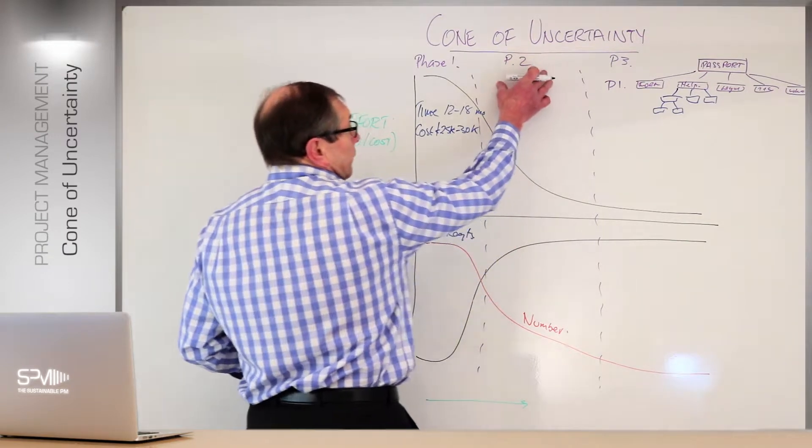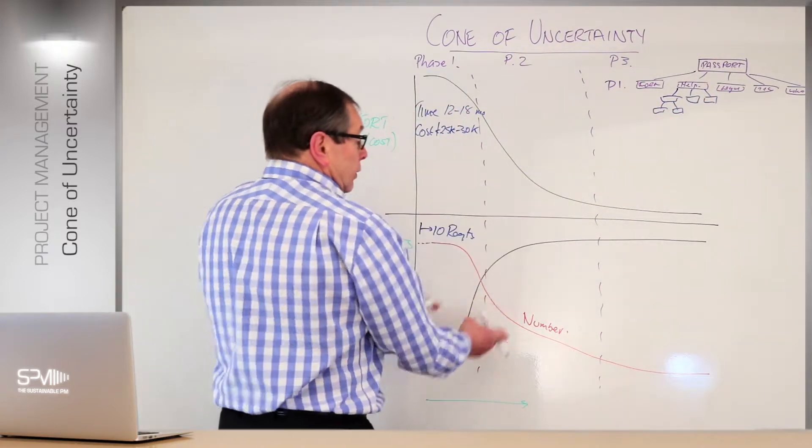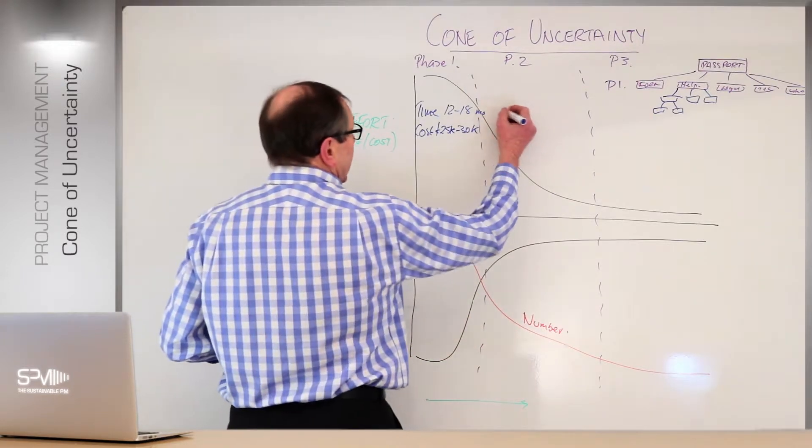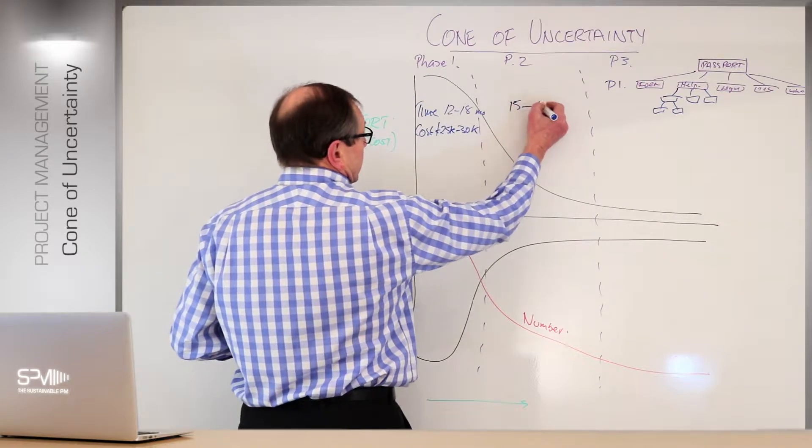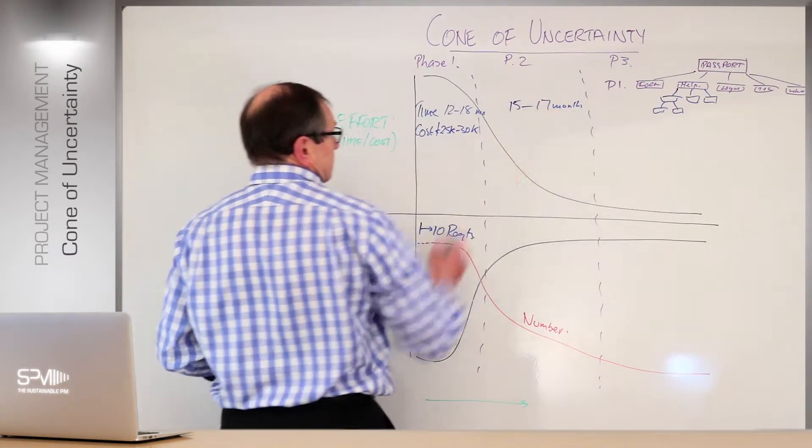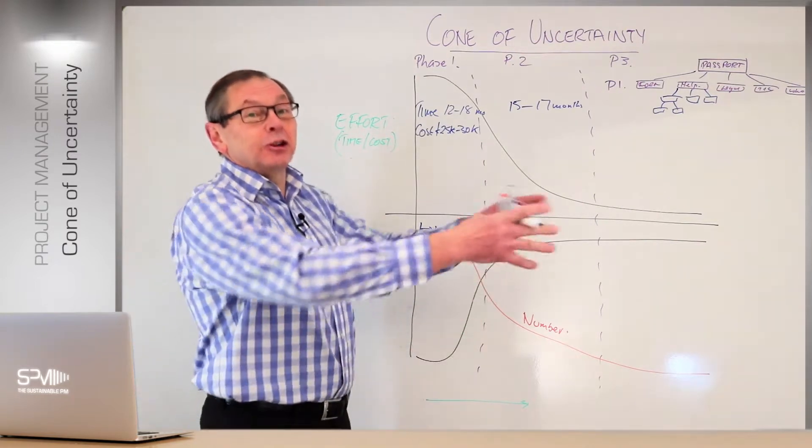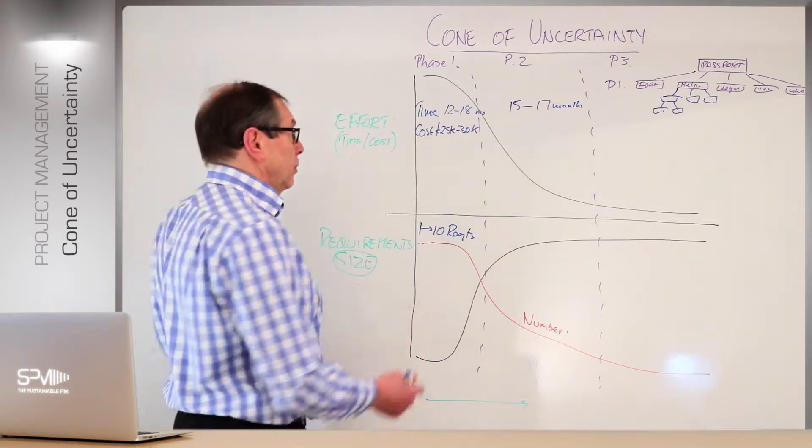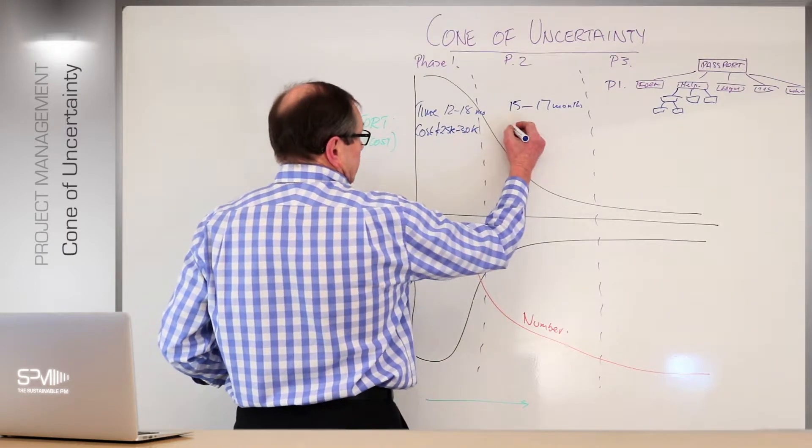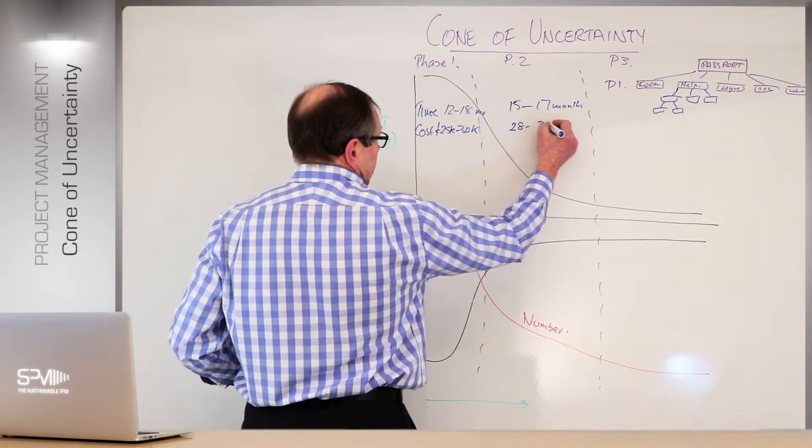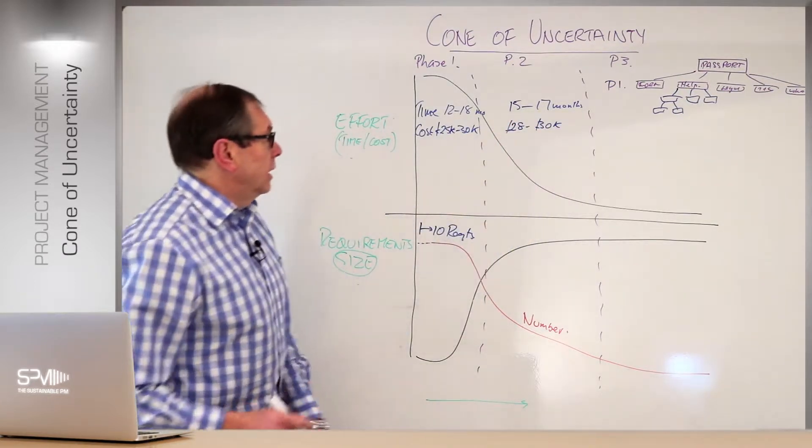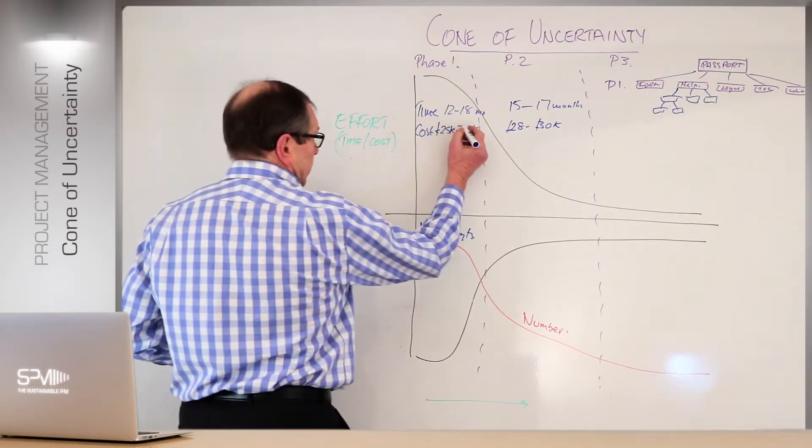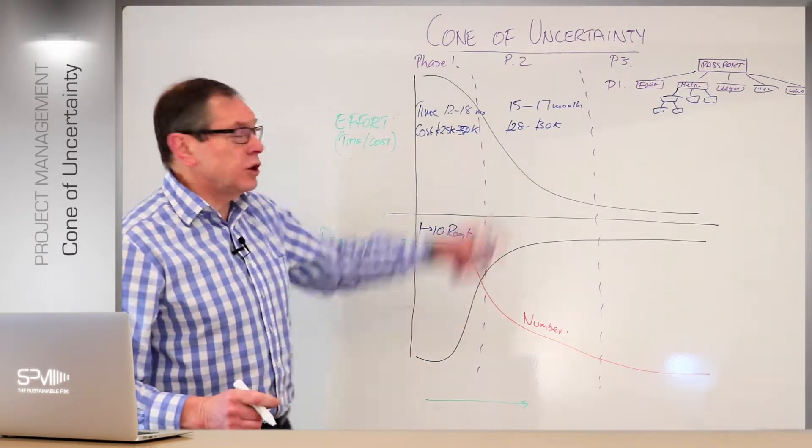During phase two, we're going to break the requirements down to get them smaller. That allows you to be more accurate on the estimation. So our time now, hopefully we'll say between 15 to 17 months. Sometimes that might actually slide outside that boundary. The costs might well end up being, let's say, between 28 and 30,000. So now we're getting a smaller range. The broad range here really should be 50, and here between 28 and 30. So the range is getting a lot smaller. The key thing is the range is very broad here, but the range in here is a lot smaller.